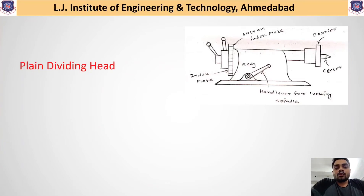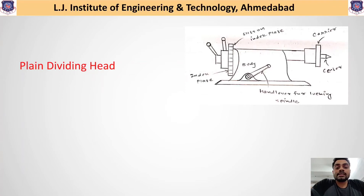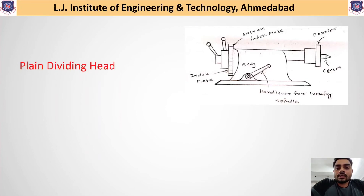The indexing plate available in the plain dividing head has 12 to 24 number of holes, so only 12 to 24 equal number of divisions can be obtained using this plain dividing head. If one wants to obtain more divisions — say 48, 96, or 120 equal divisions on the workpiece — those greater-than-24 divisions can be obtained using the universal dividing head.